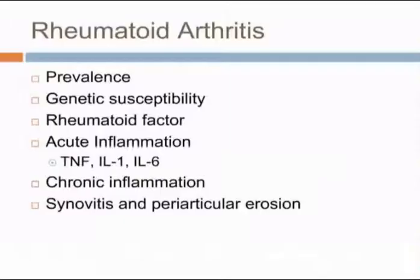Rheumatoid arthritis is an inflammatory arthropathy predominantly affecting the synovium. Prevalence in our communities is approximately three percent, and it has a predilection for the female sex, with women affected approximately four times more than men. The causative mechanism is mostly immunologically mediated arthritis, however there is some suggestion of a genetic susceptibility.